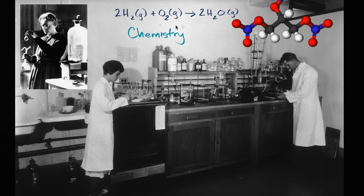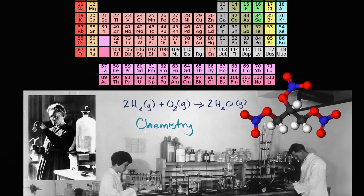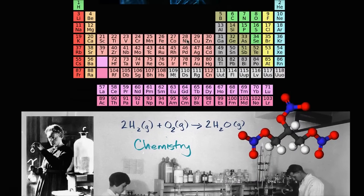They might associate chemistry with chemical equations, thinking about how different things will react together to form other things. They might think about models of different molecules that can be depicted different ways. They might associate it with the periodic table of elements. And all of these things are a big part of chemistry.